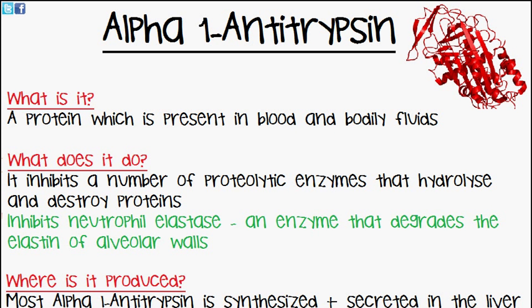What does alpha-1 antitrypsin do? Well, it inhibits a number of proteolytic enzymes that hydrolyze and destroy proteins. It also inhibits an enzyme called elastase, which is secreted by the neutrophil, which is a type of white blood cell. And what this enzyme does is it degrades the elastin of the alveolar walls.